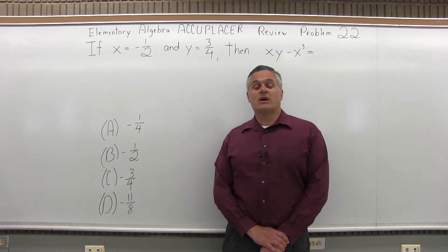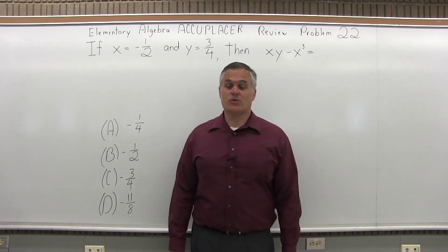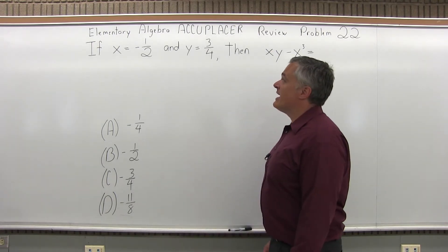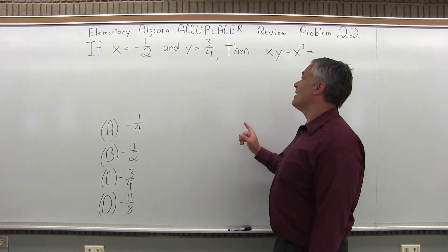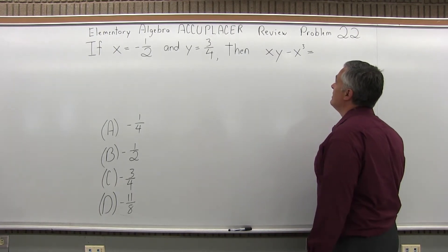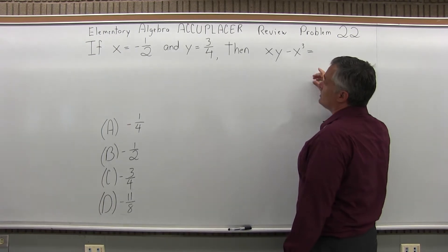This is the Elementary Algebra Accuplacer Review, question number 22. It says if x is negative one-half and y is three-fourths, then xy minus x to the third equals what?